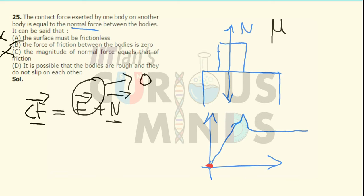It is possible that the bodies are rough and they do not slip over each other, which is option D. So the correct answers are option B and D. Thank you.